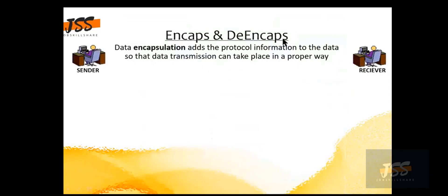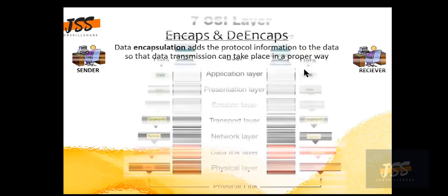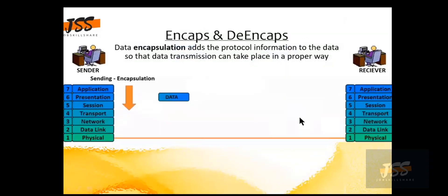Encapsulation and de-encapsulation: encapsulation adds protocol information to the data so data transmission can take place in a proper way. For example, when a sender is going to send some information to the receiver, encapsulation happens. At the application, presentation, and session layers — layers 7, 6, and 5 — it is simply called data, and no header is attached to this payload or information being sent to the receiver.